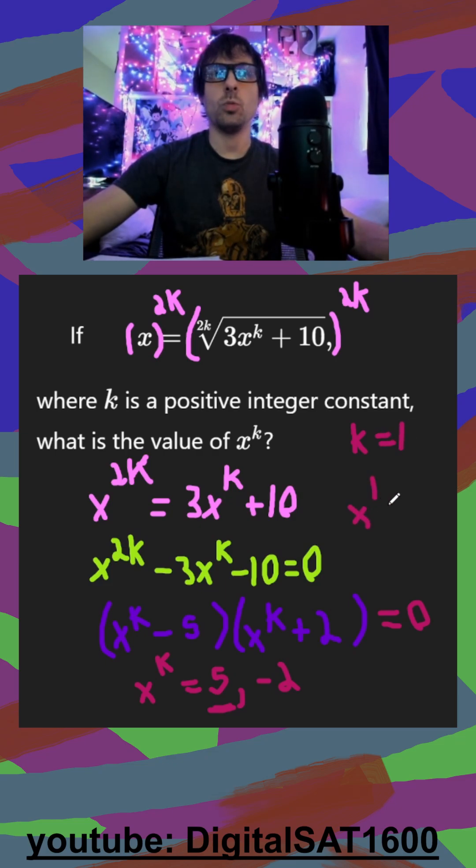So therefore, x to the 1 would be equal to negative 2. So I could say x is negative 2 up here. Well, how could I take the square root of something and then end up with a negative value, right? So that's not going to work.